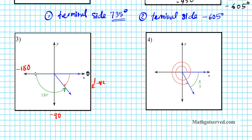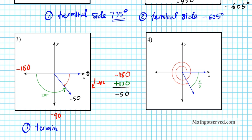So if you start from negative 180 and rotate counterclockwise — which is a positive directional rotation — how many degrees will you have left? You take the entire rotation of negative 180, which takes you from here to this side. Now if you go counterclockwise 130 degrees, that is equivalent to adding 130 degrees. So you do the calculation: negative 180 plus 130 gives you negative 50 degrees. Your terminal side is negative 50 degrees.